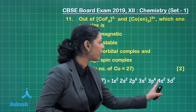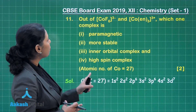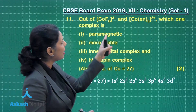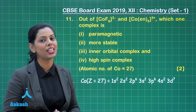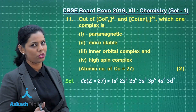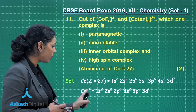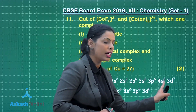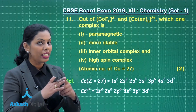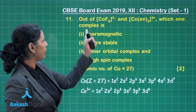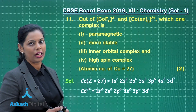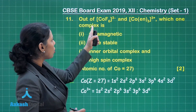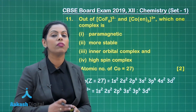For cobalt, the configuration is 4s²3d⁷. In both [CoF₆]³⁻ and [Co(en)₃]³⁺, the oxidation number of cobalt is +3, so we write the configuration for Co³⁺, which is 3p⁶3d⁶ — 2 electrons removed from 4s and 1 from 3d. Fluoride is a weak field ligand, while ethane-1,2-diamine is a strong field ligand, and this difference causes the key variation between the two complexes.